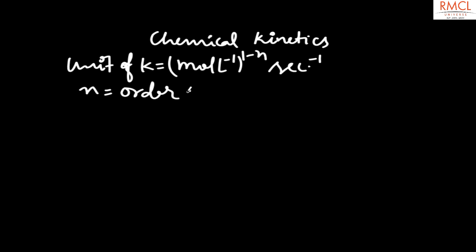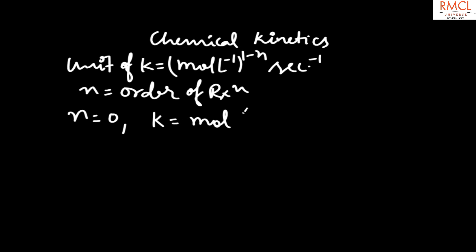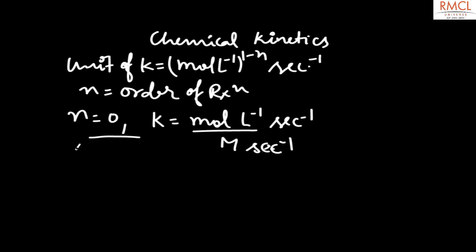For N equal to zero (zero order reaction), the unit of K is mol·liter⁻¹·second⁻¹, which is molarity per second. For N equal to 1 (first order reaction), the unit of K is simply second⁻¹. So the correct answer for this question is: second⁻¹ for first order, and molarity·second⁻¹ for zero order.